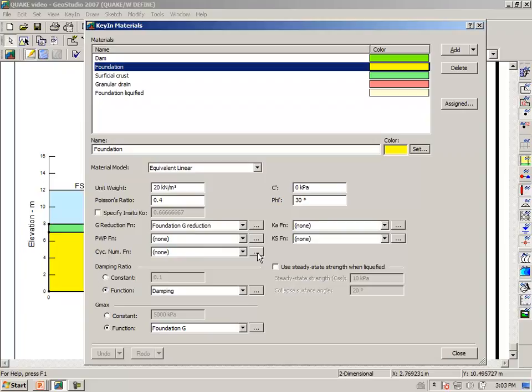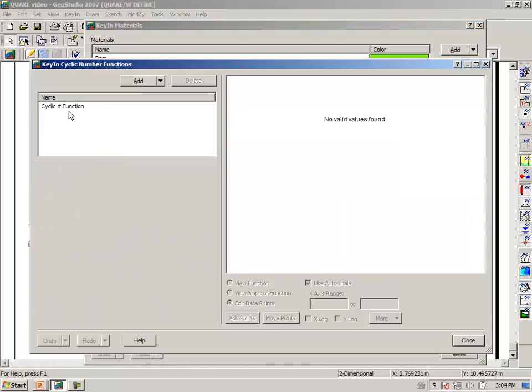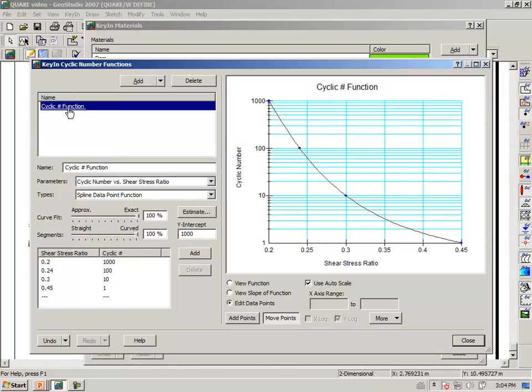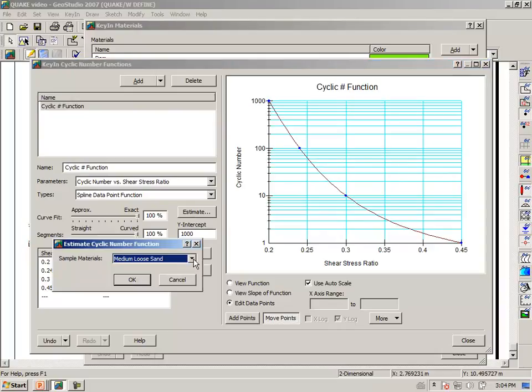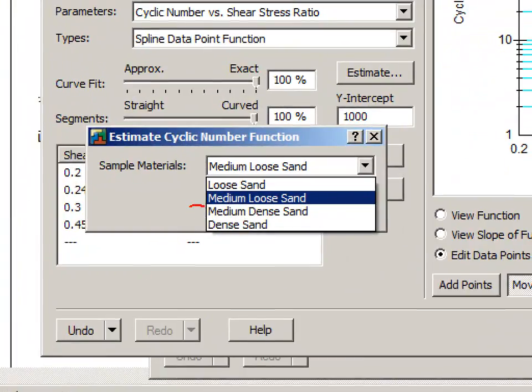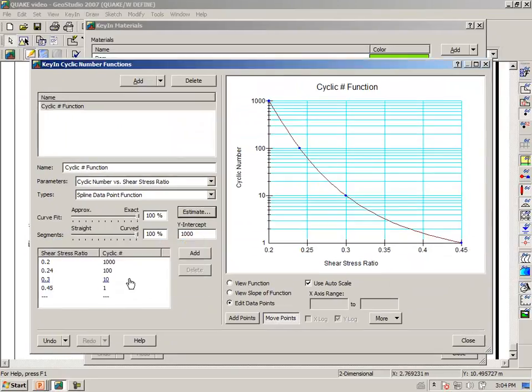If we click on this button with the dot, dot, dot, we have already defined a cyclic number function. Once again, Quake W gives you some sample function and means of estimating this curve. So we click on the estimate button. And in this case, we want to select a medium loose sand function. And so here is our cyclic number function.